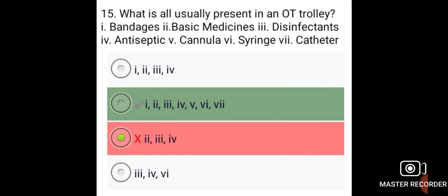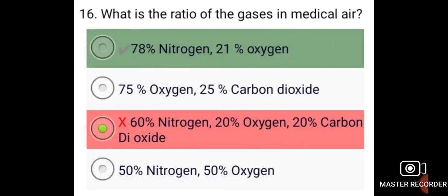What is usually present in an OT trolley? Bandages, basic medicines, disinfectants, antiseptics, cannula, syringe, and catheter.